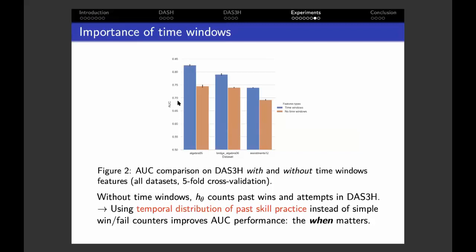We also conducted additional analysis to understand what made our model more predictive than the others. In particular, we compared DAS3H here in blue to an alternative version of it which had no time window features, only log counts of previous attempts and correct outcomes on every skill. This is the model in orange. Basically, this means that this alternative model did not have temporal information as precise as in the original DAS3H. Here, each pair of bars represents both models' performance on a different dataset. We found that using the temporal information of past skill practice instead of simple win-fail counters substantially improved AUC performance, which we interpreted as knowing when each interaction happened matters for the model.